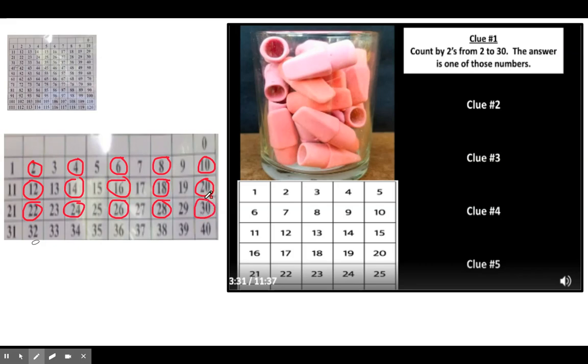So now that you've circled all of your numbers counting by twos to 30, it says the answer for the number of erasers in the cup is one of the circled numbers.